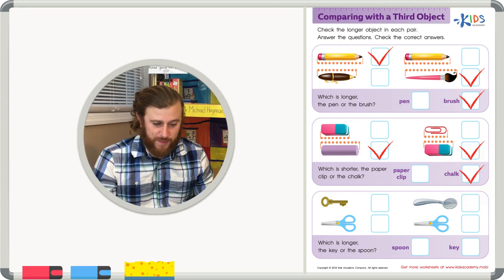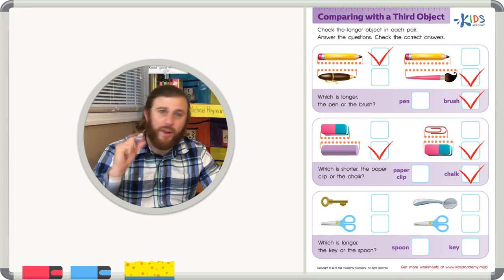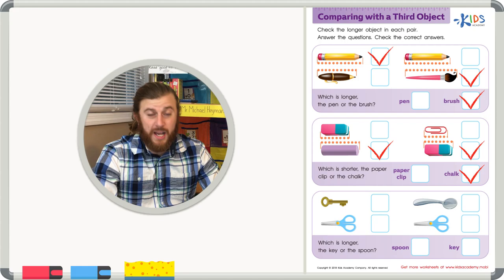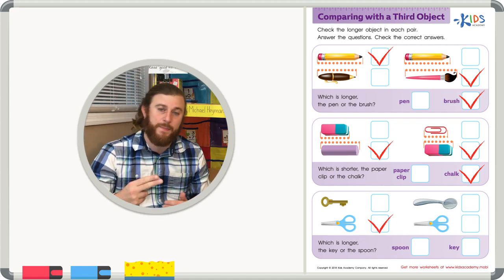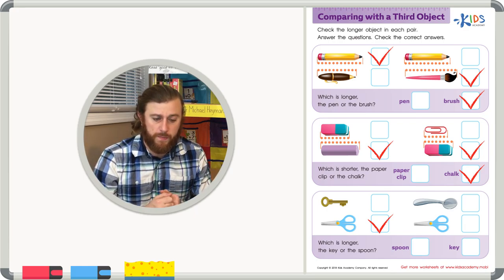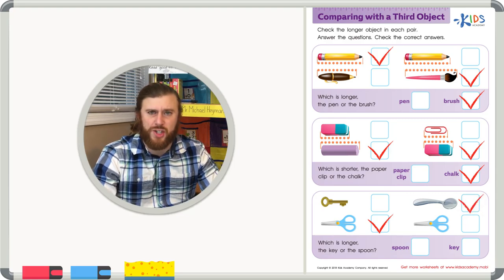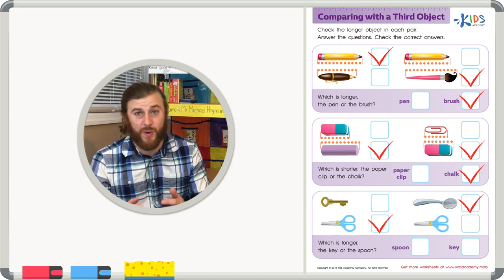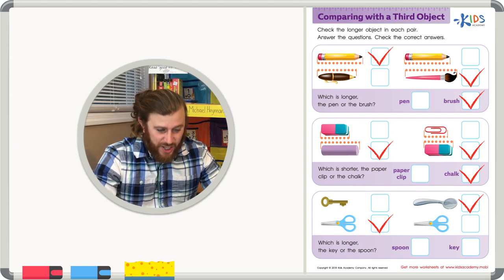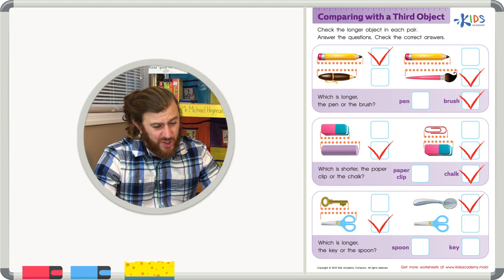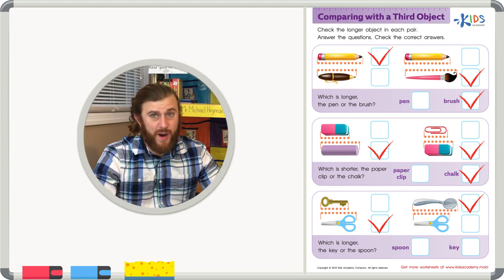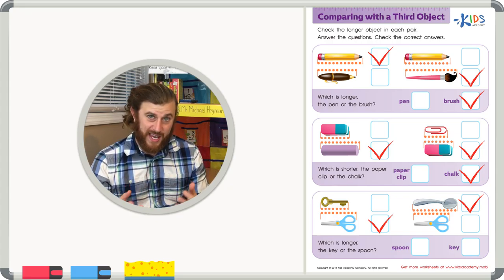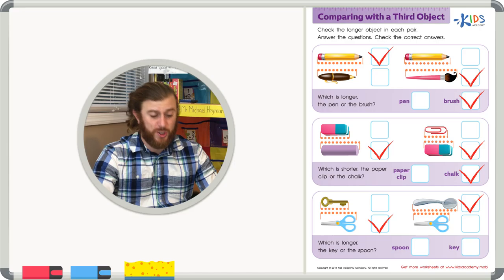Let's look at our final examples. In this picture we have a key and scissors — they're a little bit closer, so let's look carefully. The scissors are bigger than the key. In the other picture, we have a spoon and that same pair of scissors — the spoon is bigger, so let's check the spoon. Now the tricky question: which is longer, the key or the spoon? We know the key is shorter than the scissors, and the spoon is bigger than the scissors. Therefore, the spoon is the biggest object because it's bigger than the scissors, and the key is the smallest. So we know the spoon is bigger than the key.